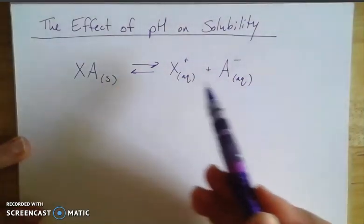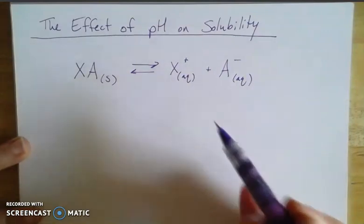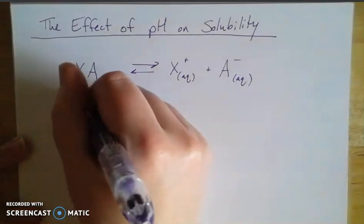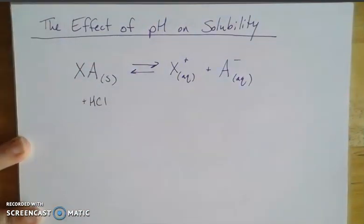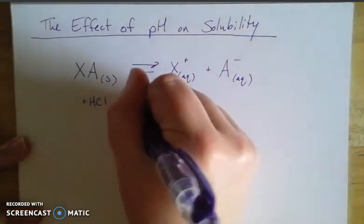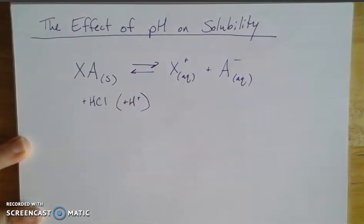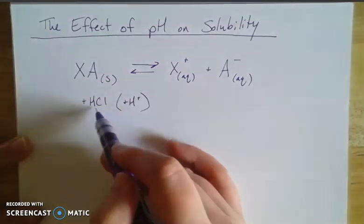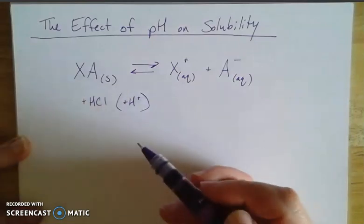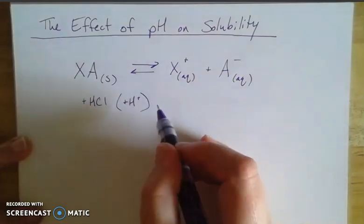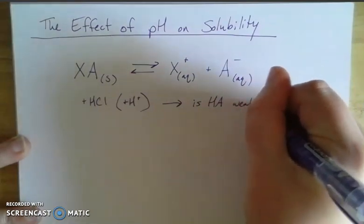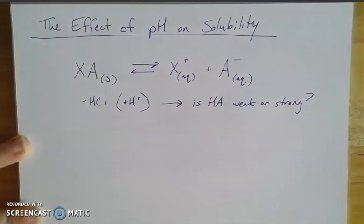Now, depending on where these ions come from, if I add an acid or a base to this system when it's at equilibrium, that can have an impact on the solubility. For example, if I was to add a strong acid like hydrochloric acid, then functionally I'm adding H+ ions, because it's a strong acid so it dissociates completely. And so long as my anion here isn't chloride, then that chloride part's not going to have any impact. But if we think about just the hydrogen part, when I add the hydrogen to this, the real question is: is HA a weak or strong acid?